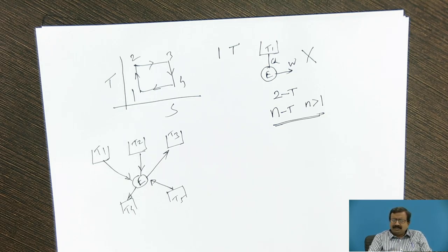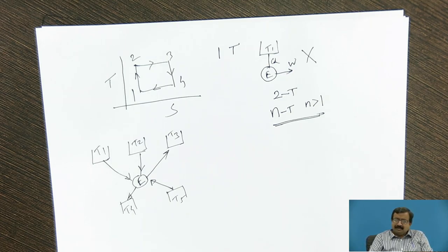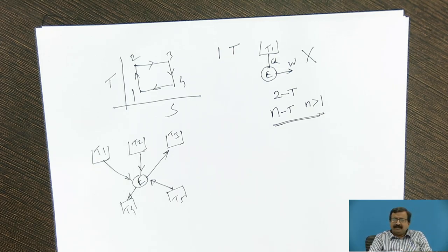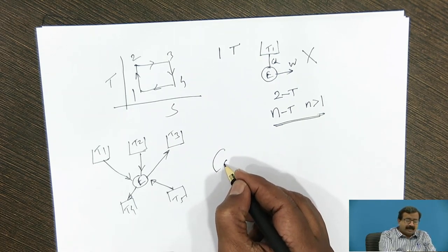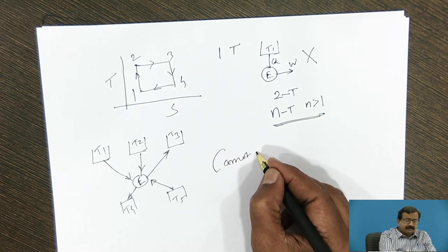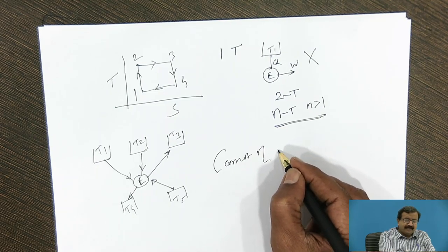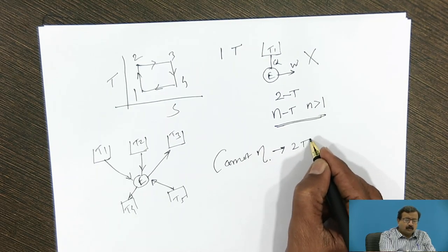You will come across such numericals when we solve the problems. But there is a difference. Carnot efficiency that we are going to derive, or say valid today, is valid only for a 2T engine. So first thing is, Carnot efficiency is valid only for 2T engine.